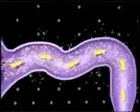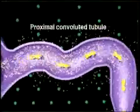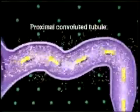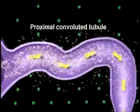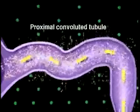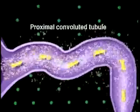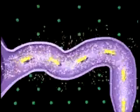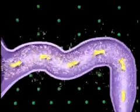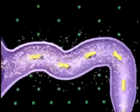Filtrate within Bowman's capsule enters the proximal convoluted tubule. Reabsorption of important molecules and ions from filtrate back into blood occurs here.